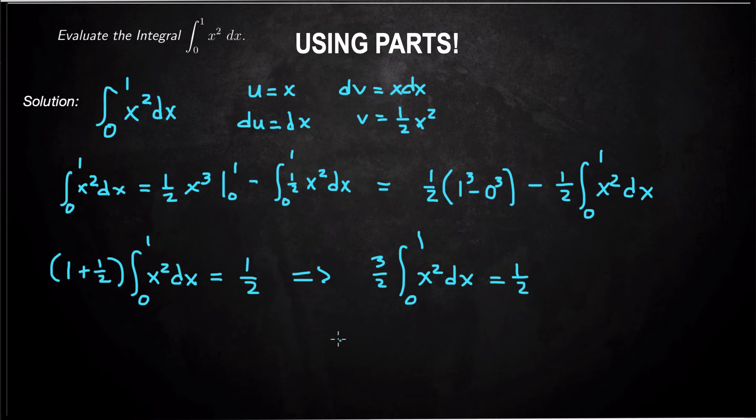So now solving for the integral, we multiply both sides by 2 thirds. So we get the integral from 0 to 1 of x squared dx equals 2 thirds times 1 half, which is 1 third.